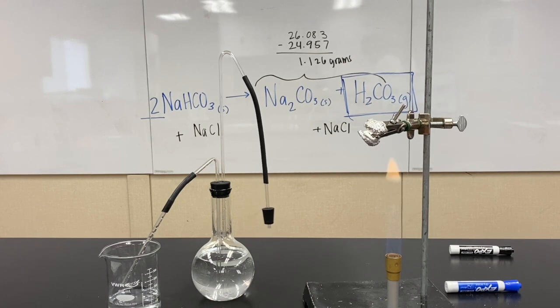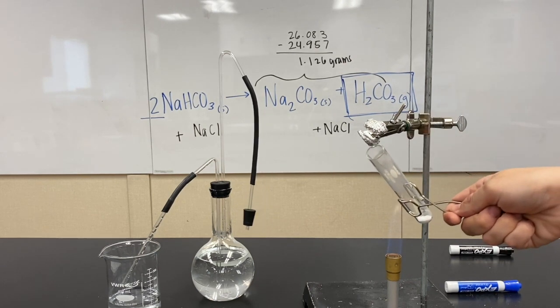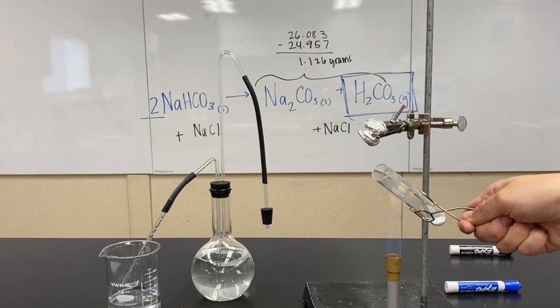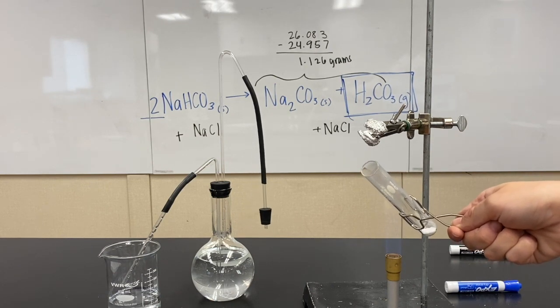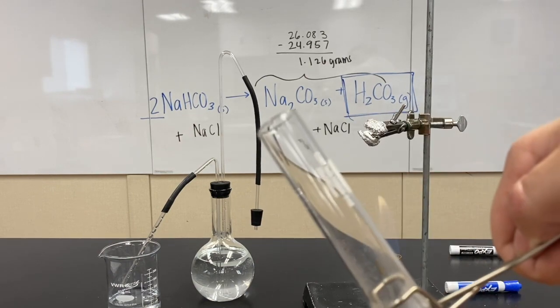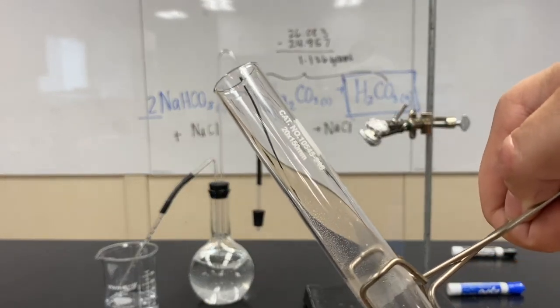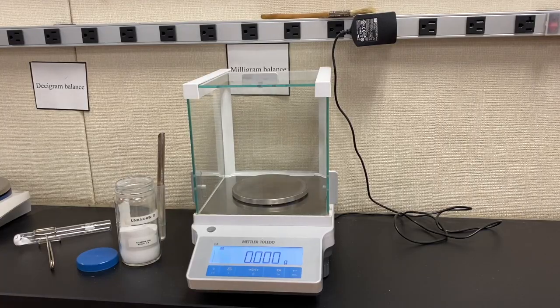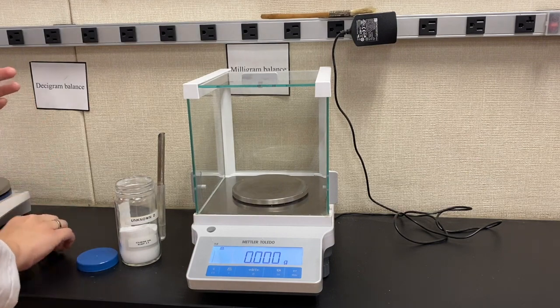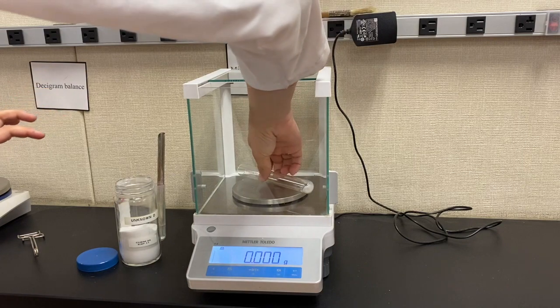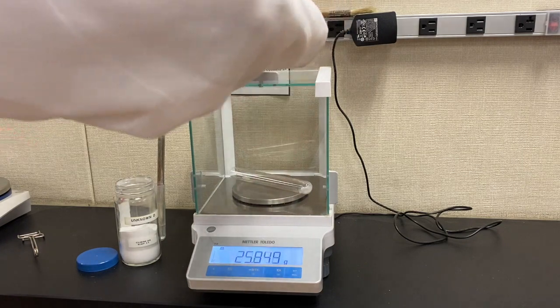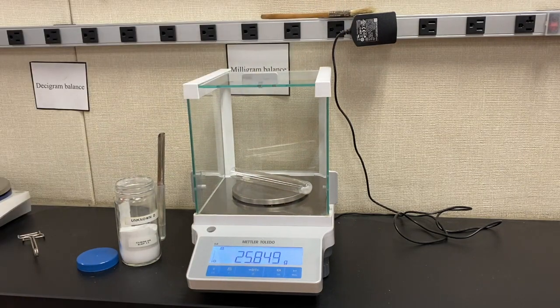Now we evaporate the condensation that's left on the sides of the test tube. Very good. Let's go mass it. Okay, back at the weighing station. Ta-da! There we go.